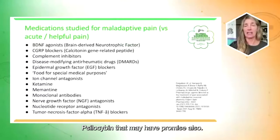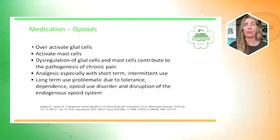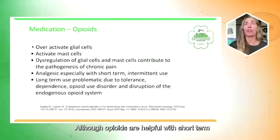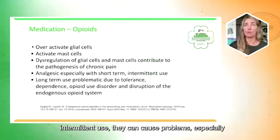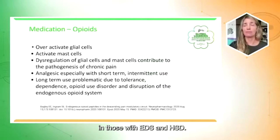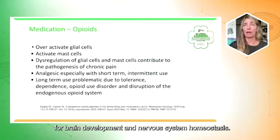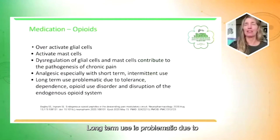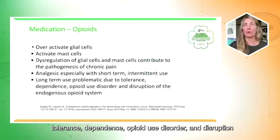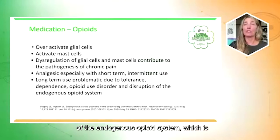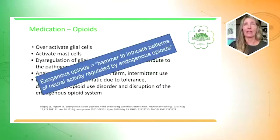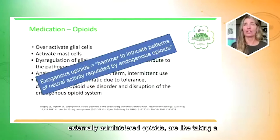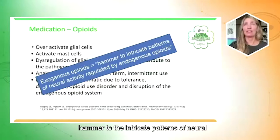Why don't we just prescribe opioids? Although opioids are helpful with short-term intermittent use, they can cause problems especially in those with EDS and HSD. They activate glial cells, which are crucial for brain development and nervous system homeostasis, and they activate mast cells — both of which contribute to the pathogenesis of chronic pain. Long-term use is problematic due to tolerance, dependence, opioid use disorder, and disruption of the endogenous opioid system, which is our innate pain-relieving system. Exogenous opioids have been described as taking a hammer to the intricate patterns of neural activity regulated by endogenous opioids.